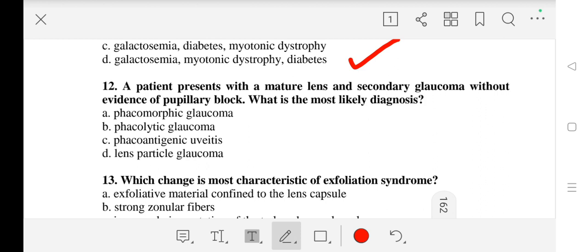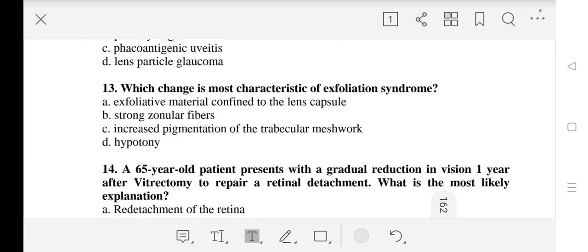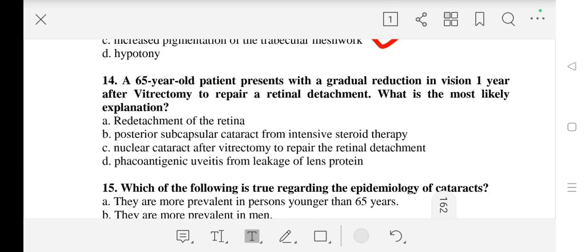Question number 13: Which change is most characteristic of exfoliation syndrome? Our correct answer is C - increased pigmentation of the trabecular meshwork. Question number 14: A 65-year-old patient presents with a gradual reduction in vision one year after vitrectomy to repair a retinal detachment. What is the most likely explanation? The right answer is C - nuclear cataract after vitrectomy to repair the retinal detachment.